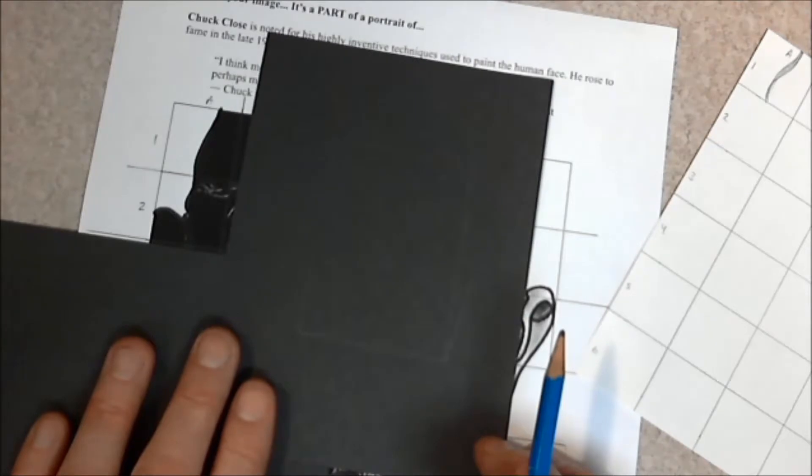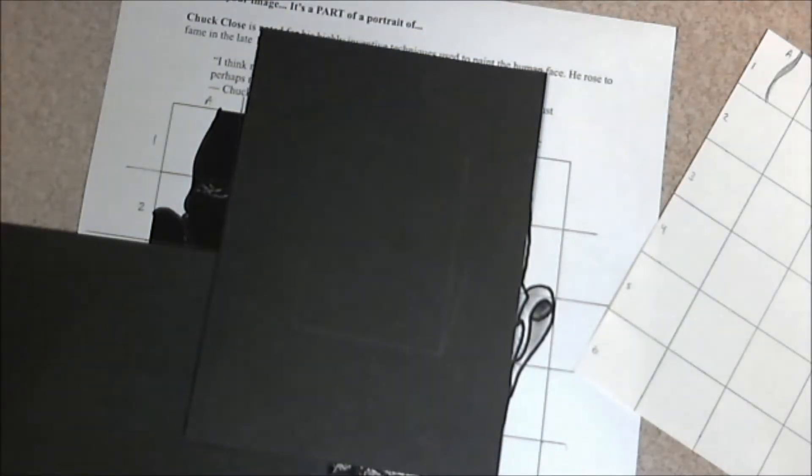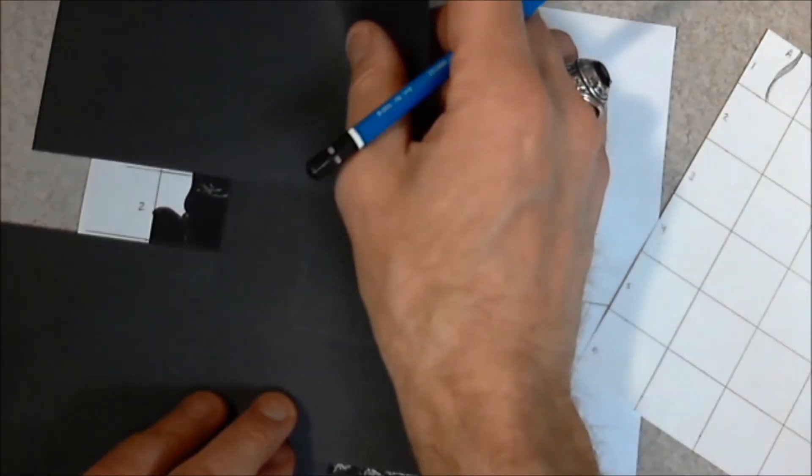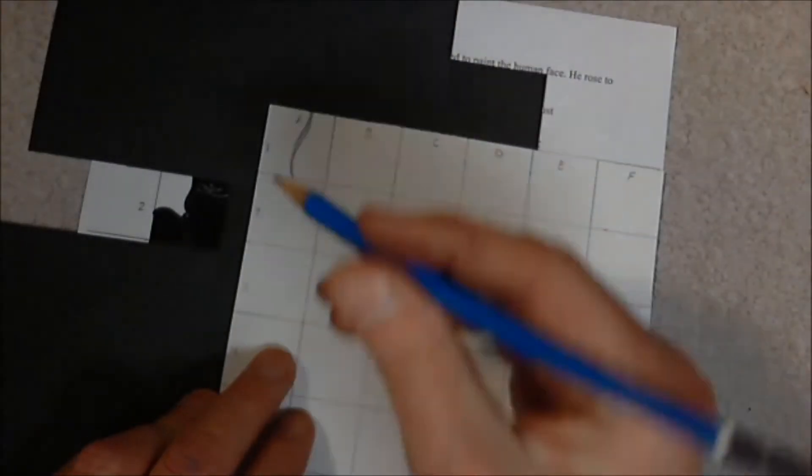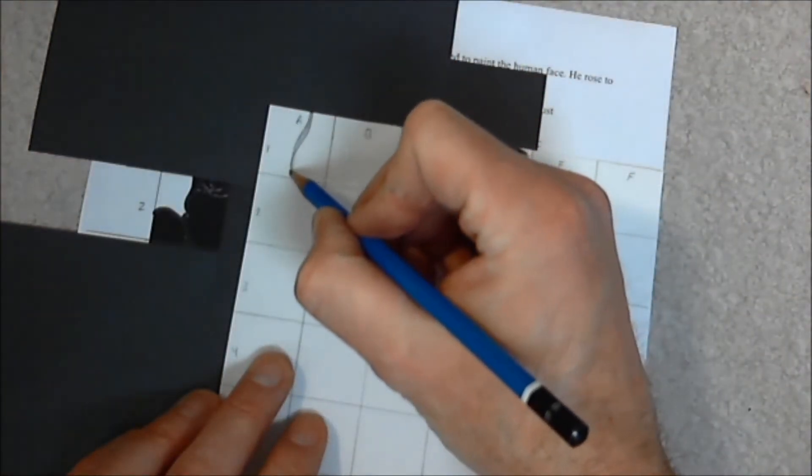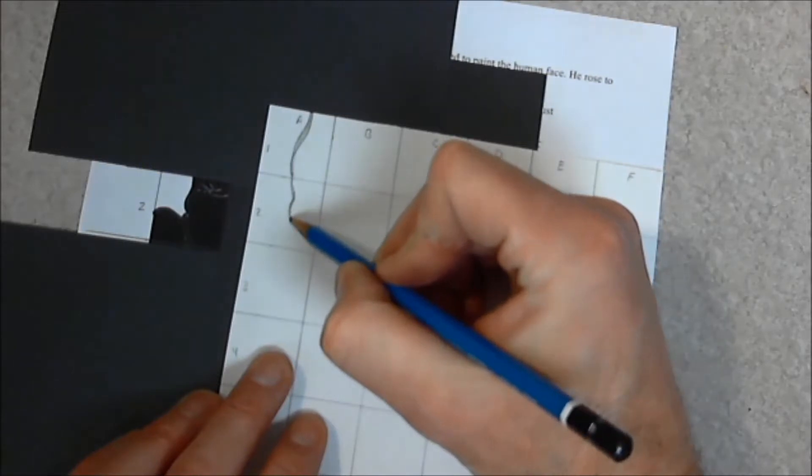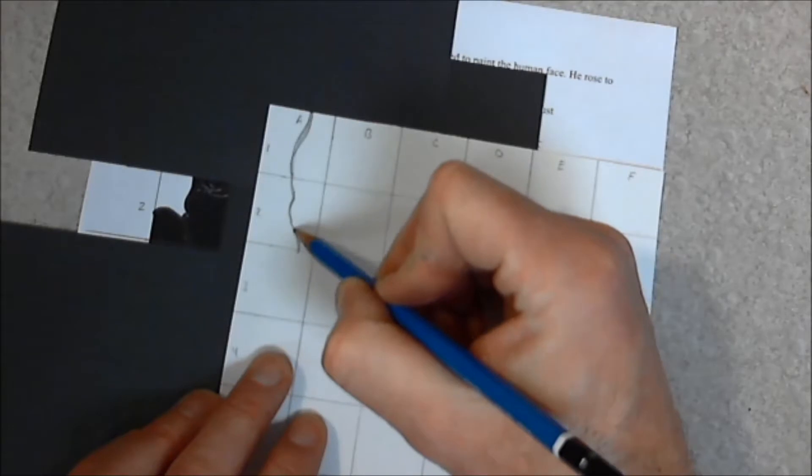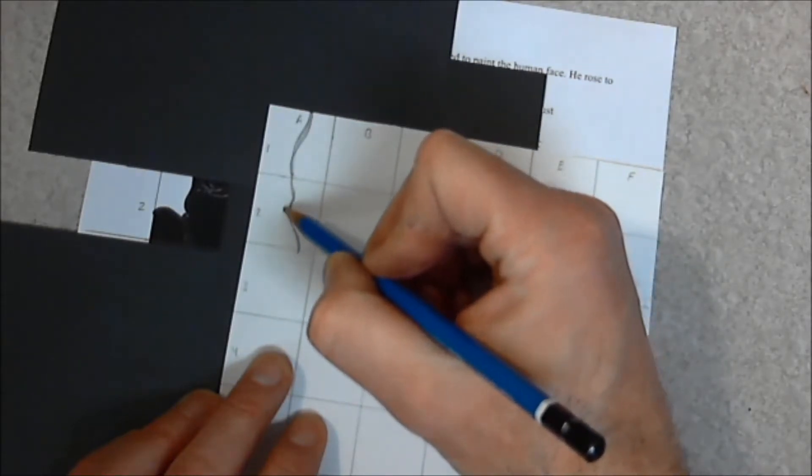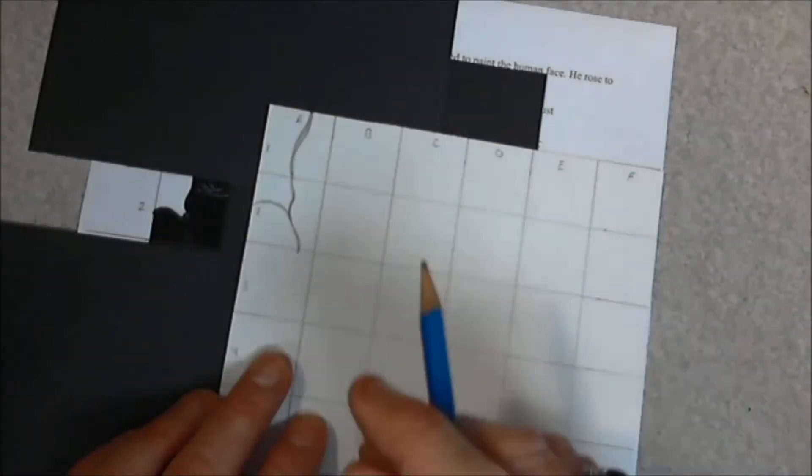Then what I could do is I could move down to square A2. And taking another piece of paper, and maybe at some point I could make myself a one inch viewfinder. And I can transfer this space. So what happens in square A2? Well, this line comes down, bends a little bit. There's another line here that I've drawn in with my black fine tipped marker. And then this line curves up and over. Not a lot in this particular square. So I'm going to try a different one.